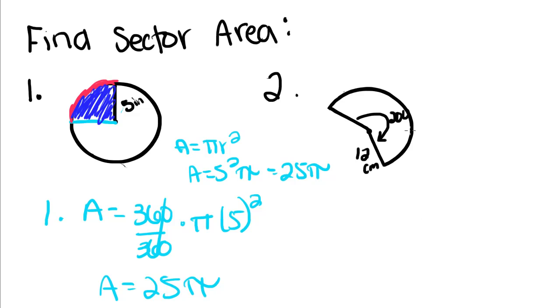We have one more problem that we're going to do. We're finding it of this arc. So A is equal to 200 over 360 radius squared times pi.